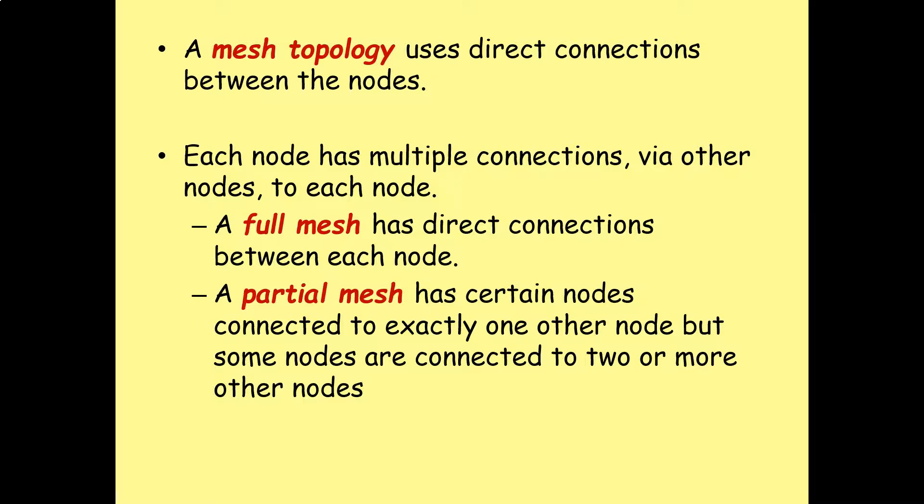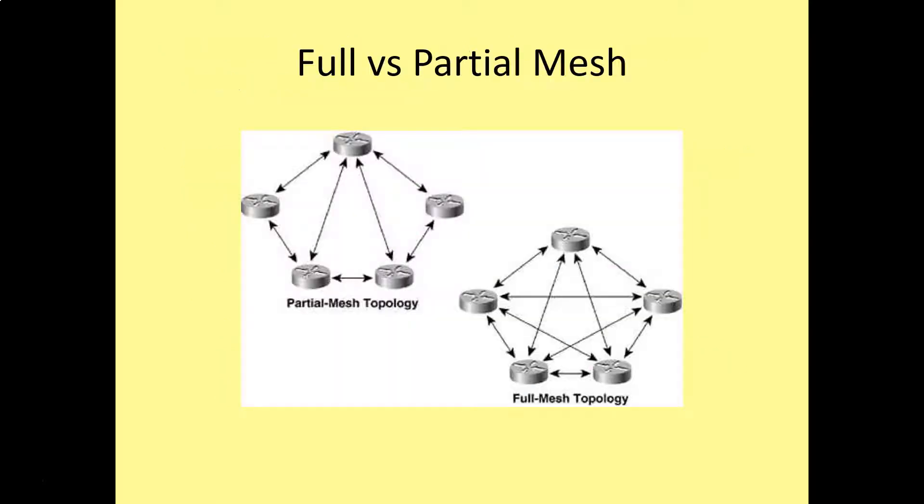A full mesh has direct connections between each node. A partial mesh has certain nodes connected to exactly one other node, but some nodes are connected to two or more nodes. So again, we have that example here. You can see we've got a full mesh topology. For some reason we're getting lines kind of randomly appearing here. I'm not sure why. But you can see each node is connected to every other node on the network.